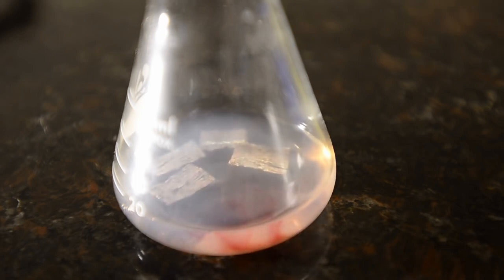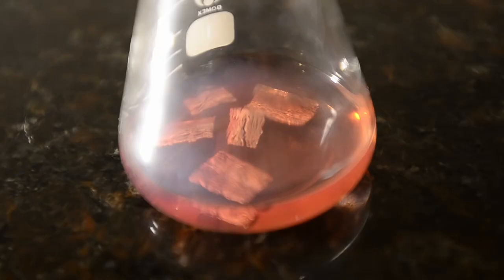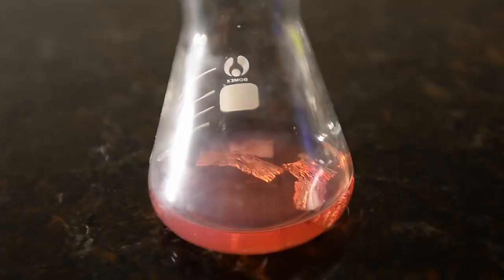We added a small amount of a methyl iodide solution in dry dichloromethane using the same proportions as before. Once again after a few minutes we saw no reaction. So we added the remainder of the solution and then waited.